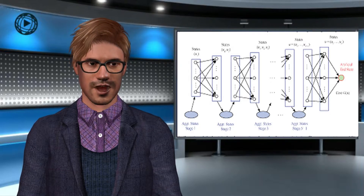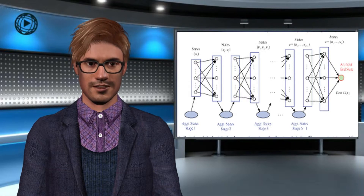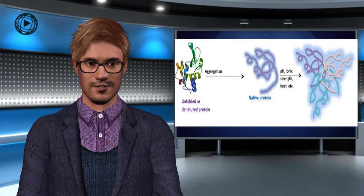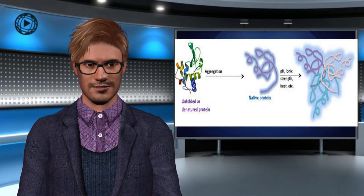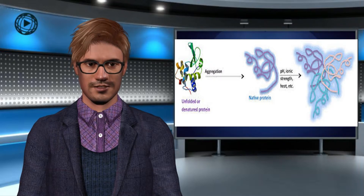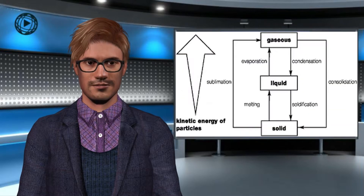The main state of aggregation of a substance cannot always be clearly defined. Some substances are in states with mixed properties. For example, amorphous bodies and liquid crystals at the same time have some properties of solids and liquids — they flow as a liquid, but they can keep their shape.